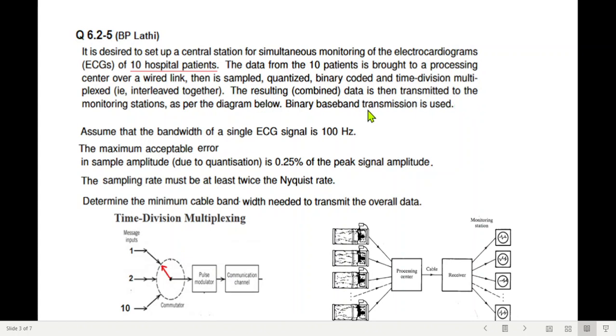The resulting combined data is then transmitted to the monitoring station, and all the 10 ECG data are monitored here. A binary baseband transmission is used. Assume that the bandwidth of a single ECG is 100 Hz. The maximum acceptable error in the sample amplitude due to quantization is 0.25% of the peak signal amplitude. The sampling rate must be at least twice the Nyquist rate. We have to determine the minimum cable bandwidth needed to transmit the overall data.